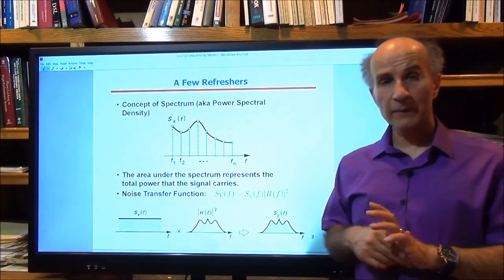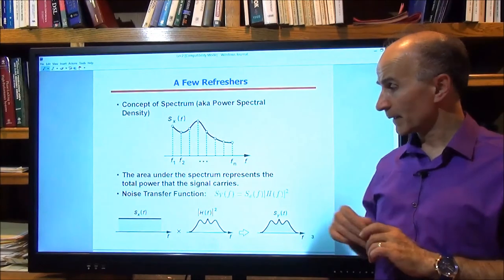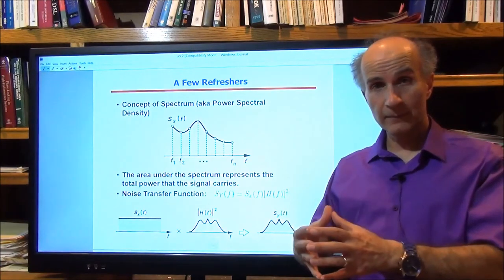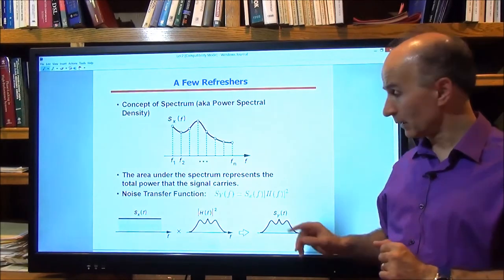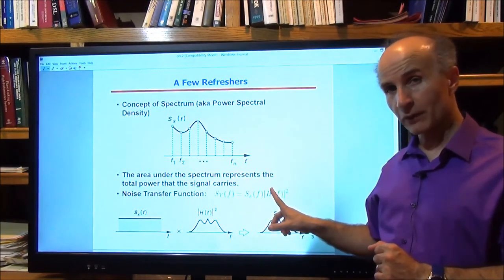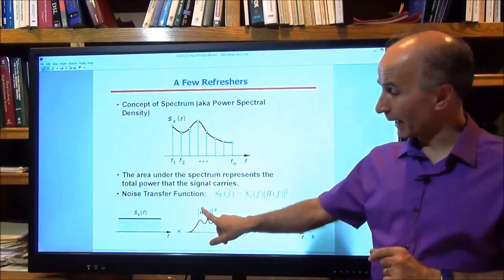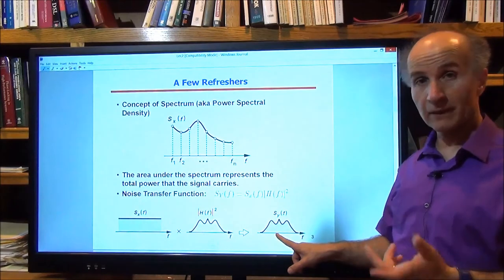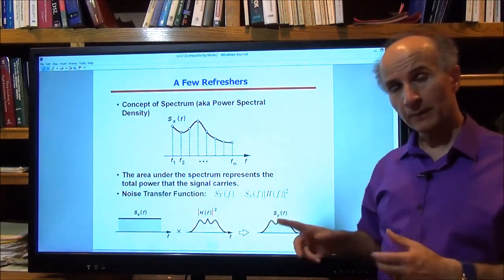The second key concept from last time is the theorem that says if we have the input spectrum to a linear time-invariant system whose transfer function is H(s), then the output spectrum is given by the input spectrum multiplied by the magnitude squared of the transfer function. So if we have some noise spectrum coming in and the magnitude squared has some shape, then the output spectrum will be shaped accordingly. Sometimes we call this a noise shaping function.